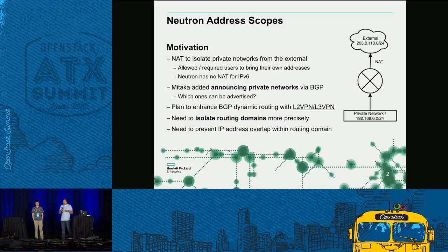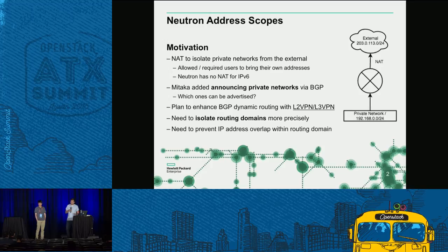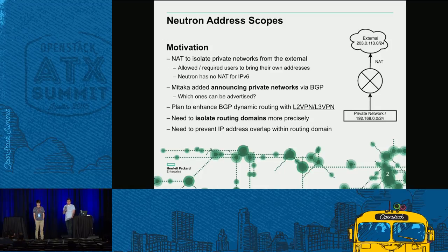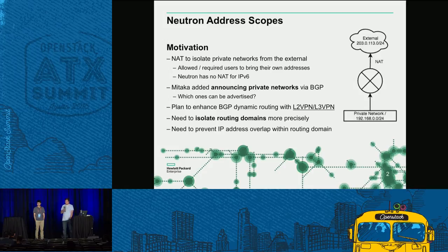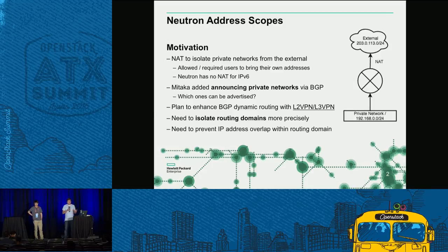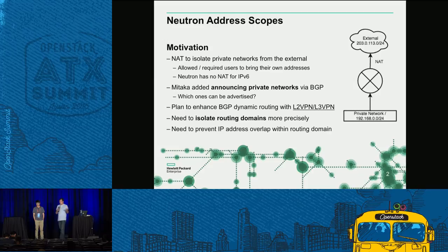Neutron was envisioned as having tenant networking and an external network, modeled after how home internet works. Your home router probably has at most one public address on the outside, and on the inside you use whatever addressing you want — probably something from RFC 1918. There's likely a lot of overlap between you, your neighbors, and everyone else in the world. Neutron originally modeled this: let tenants use whatever addresses they want, and put NAT between the tenant networks and the external network.